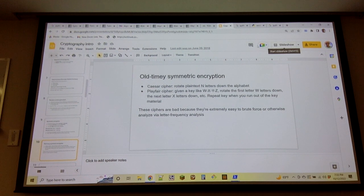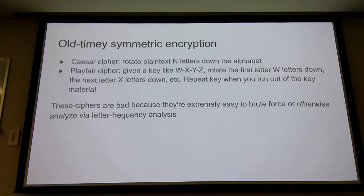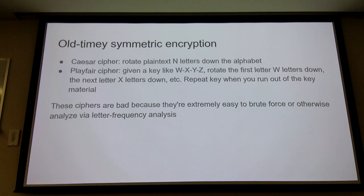Before we had computers, we had cryptography — it just wasn't good. Caesar cipher is where you rotate things down the alphabet, something you might have done as a seven-year-old. ROT13 is technically a Caesar cipher with a key of 13.